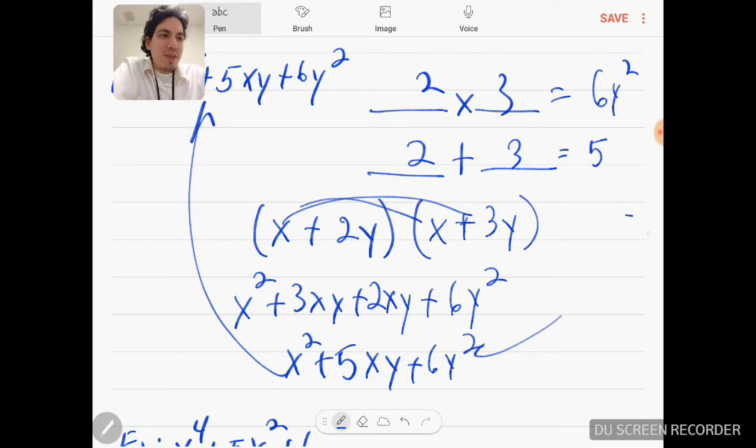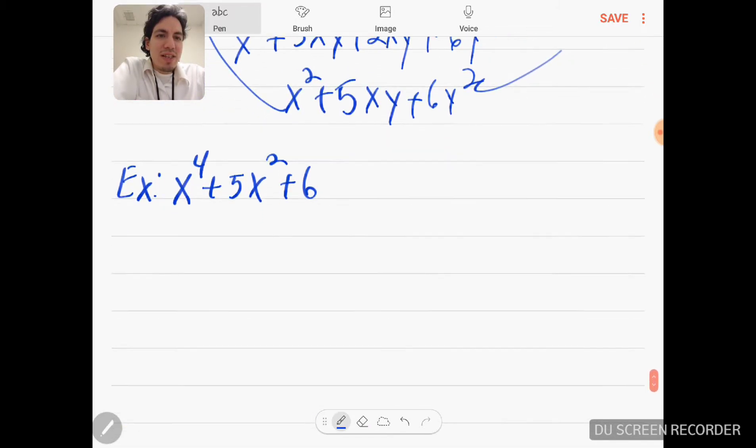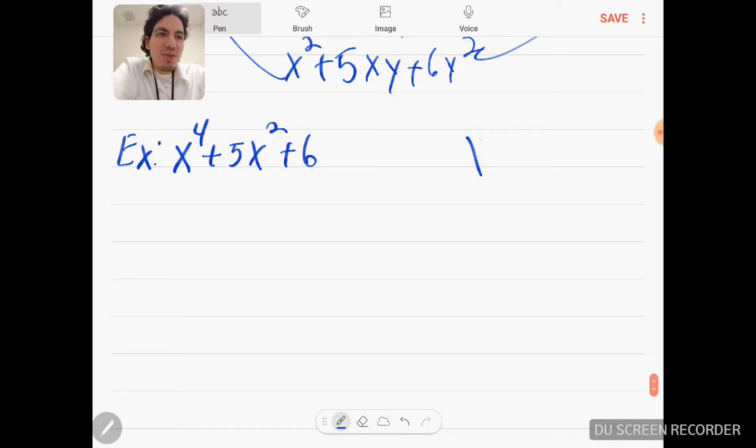All right, let's check the last example. Two numbers where you multiply them give you 6, and two numbers where you add them give you 5.